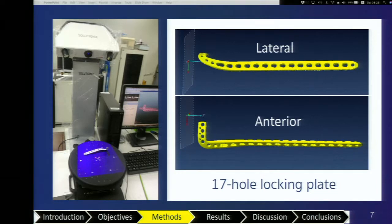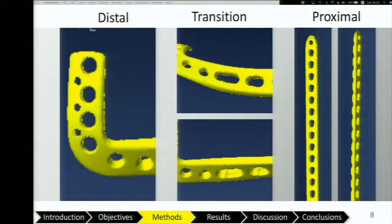We categorized the plate into three zones. The distal zone is the most important — any plate prominence can irritate tendons and affect the neurovascular structure. In the transition zone, hole numbers one to four, the plate changes from the anterior plane to the lateral plane, and each screw hole has a different shape and angle. In the proximal zone, the fifth to 17th holes all have a similar shape and angle.